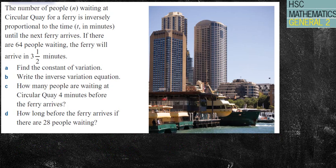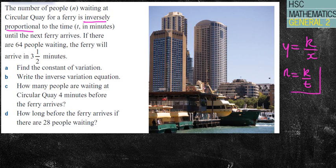Next question. The number of people waiting at Circular Quay for a ferry is inversely proportional. Straight away, I'm thinking y equals k over x. There's no squares or square roots, so I'll change that to n equals k over t. I'll put a rectangle around that.